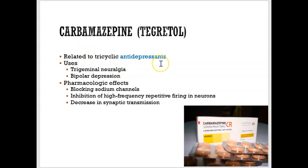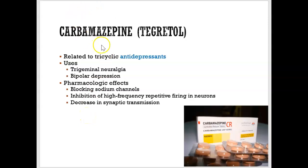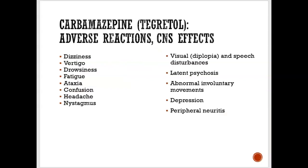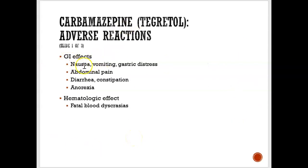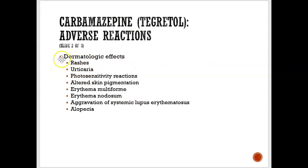Carbamazepine is an important medication to know. It is primarily used as an antidepressant, but it can also help with seizures, functioning as an anticonvulsant. So carbamazepine serves dual purposes: treating depression and controlling seizures. It has several side effects including GI effects such as nausea and vomiting, and it can also cause rashes.